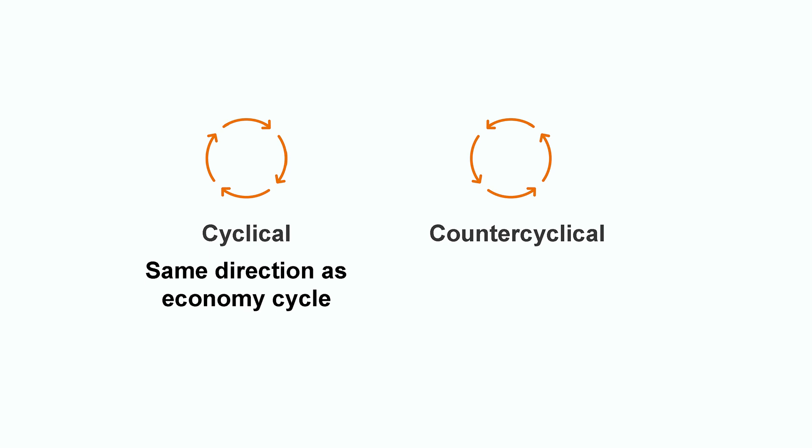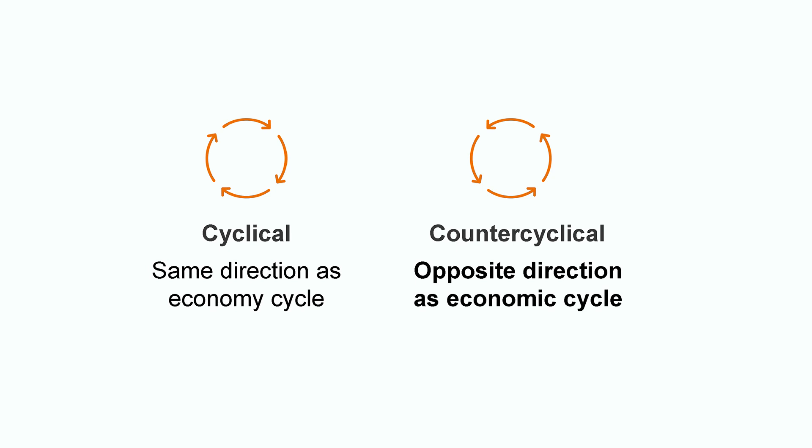Cyclical policy goes along with the economic cycle. For example, if a country is experiencing economic growth, a cyclical policy would be expansionary. If it were counter-cyclical, it would have to go in the opposite direction to the economic cycle. In this case, the policy should be contractionary. But what triggered this way of thinking?